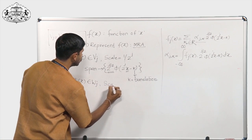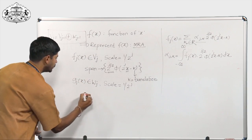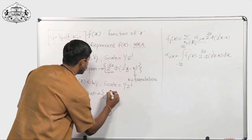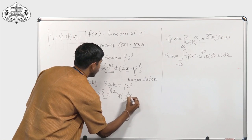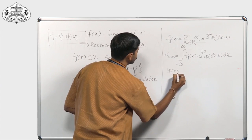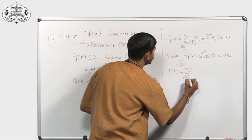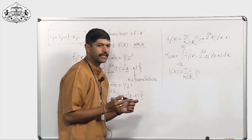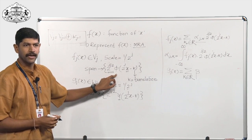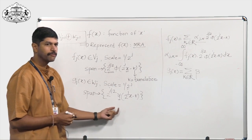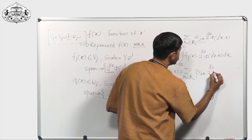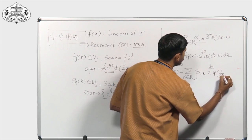If the scale of analysis for W of j subspaces is 1 upon 2 to the power j, the span is achieved by the kernel function which is the high-pass filter: 2 to the power j by 2 times psi of (2^j x minus k). Using this as the span, g_j of x equals summation over all k in R of detail coefficient beta of j k, times 2 to the power j by 2, times psi of (2^j x minus k). Here psi is my wavelet filter — the high-pass filter — and phi is my father or scaling function — the low-pass filter.